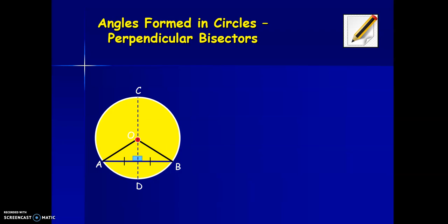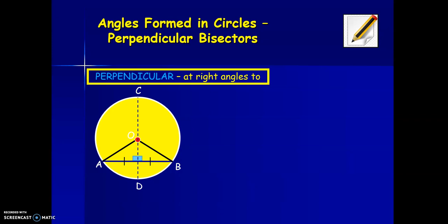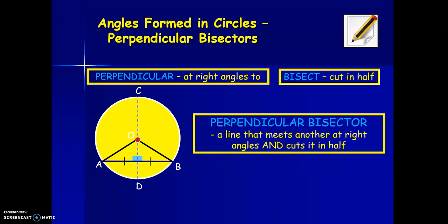Remember where you see the paper and pencil icon to copy the notes into your notes jotter or complete the exercises into your class jotter. So firstly, some meanings, some definitions. Perpendicular means at right angles to. Bisect means cut in half. So if we have a perpendicular bisector, that means a line that meets another at right angles and cuts it in half.